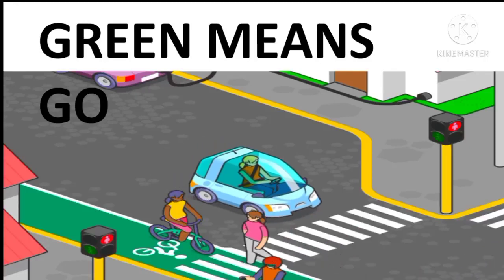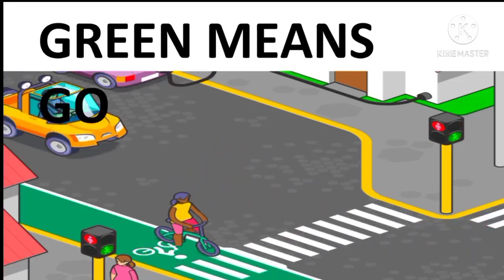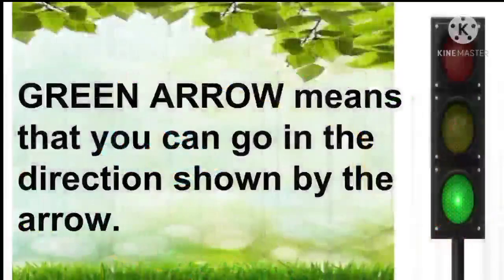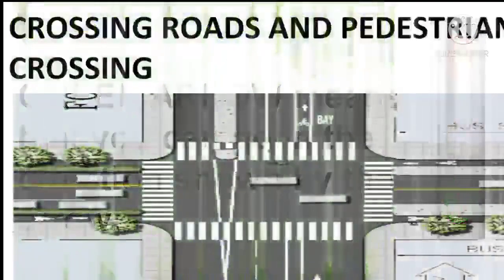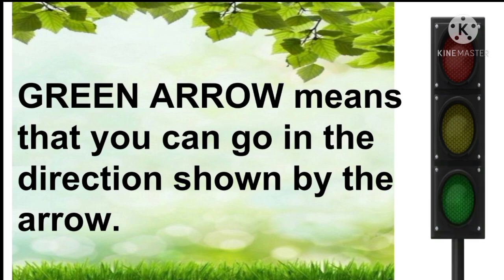Green means go — proceed ahead ensuring that the way is clear. A green arrow means that you can go in the direction shown by the arrow. You can make a right or left turn if not prohibited by signs, but take special care and give way to pedestrians crossing roads.